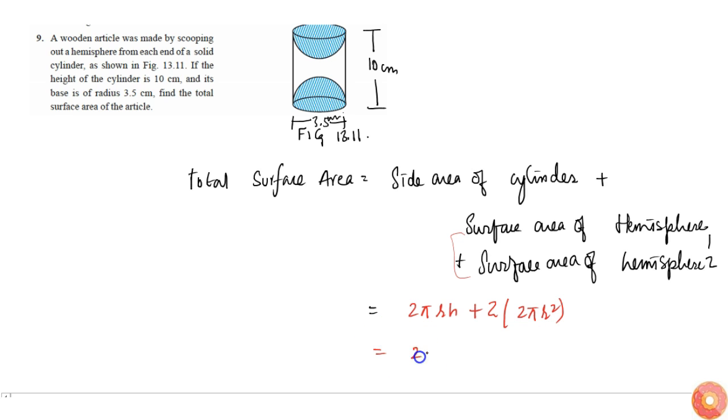...The radius of base is 3.5, so this is 2π × 3.5 × (h + 2r), that is 10 + 2r, and 2r is 7.